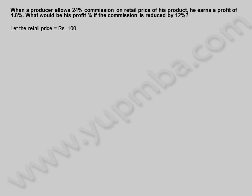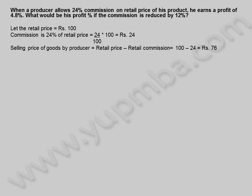Let the retail price equal 100 rupees. Commission is 24% of retail price = 24/100 × 100 = 24 rupees. Selling price of goods by producer = retail price minus commission = 100 − 24 = 76 rupees.